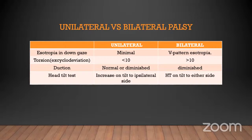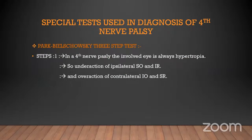In unilateral palsy, the adduction position is mostly normal; in bilateral palsy it is diminished. Head tilt in unilateral palsy increases on tilt to the ipsilateral side with hypertropia, and on tilt to the other side. A special test used in the diagnosis of fourth nerve palsy is the Park-Bielschowsky three-step test.